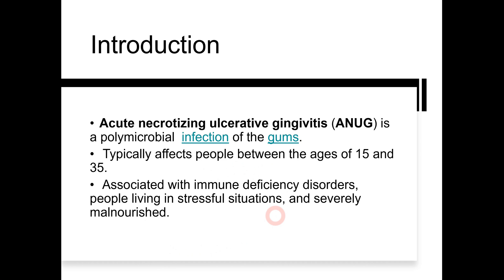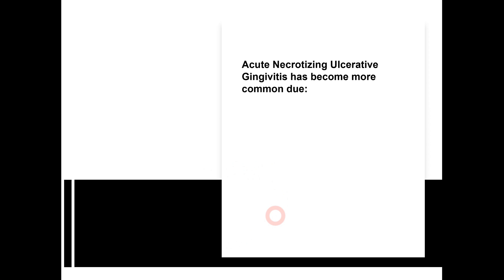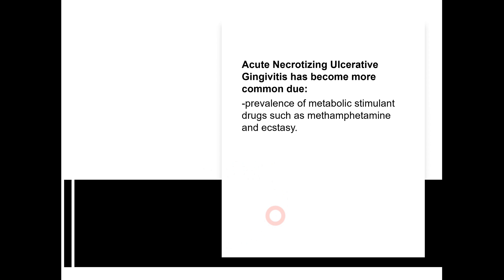It is very important to identify ANUG and then identify the underlying cause. Recently there has been a surge in cases of ANUG because of the consumption of various drugs and substance abuse. This is one reason why ANUG is increasing in incidence in recent years, so you should take a thorough patient history to identify any drugs that may have led to the patient suffering from ANUG.